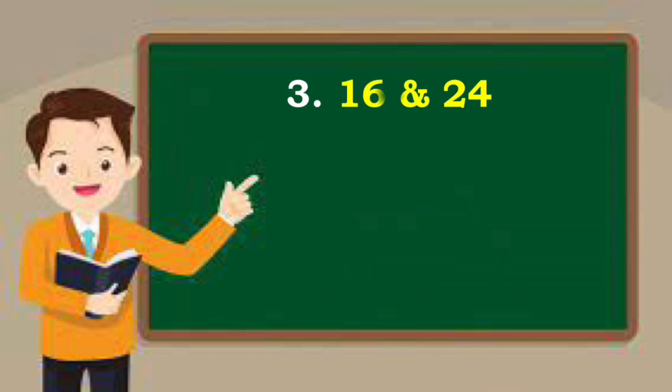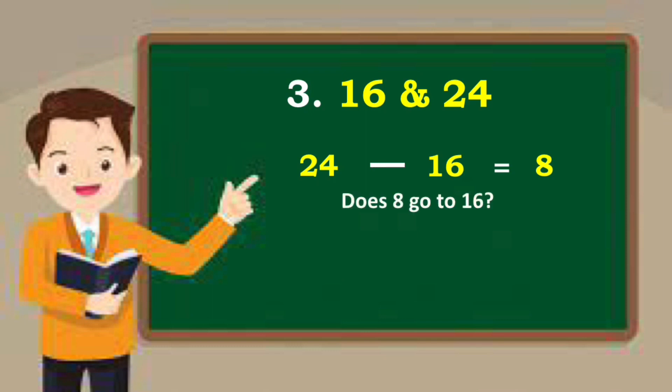How about 16 and 24? Subtract: 24 minus 16 is equal to 8. Does 8 go into 16? Yes. Then the GCF is 8.